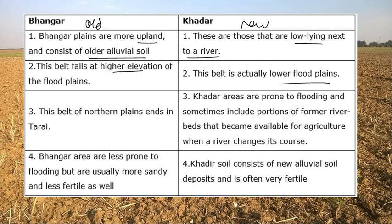In the northern plains, the bhangar belt ends at higher elevations. Bhangar areas are less prone to flooding but more sandy and less fertile. Khadar soils, on the other hand, are new alluvial soils and are very fertile, found in the flooding areas near river beds.